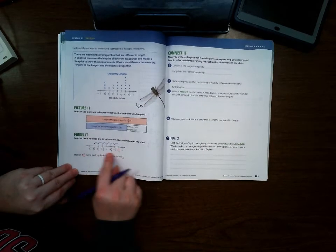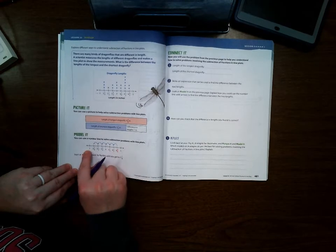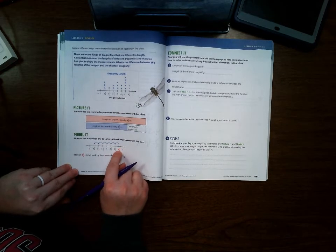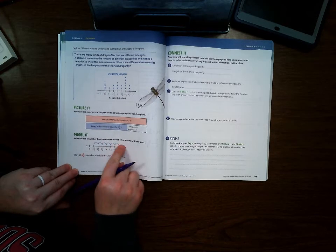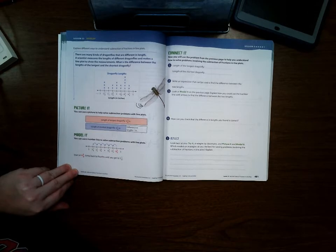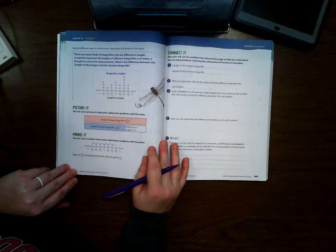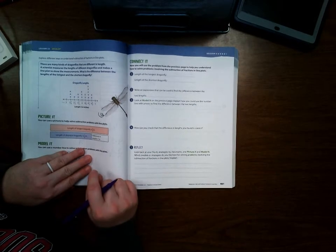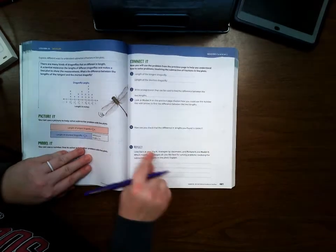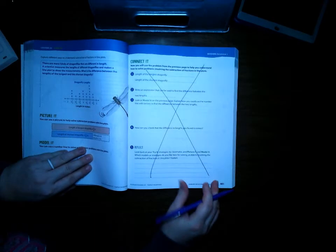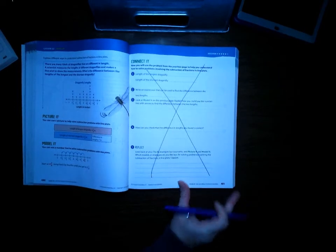You can also do this using a number line. You would draw it from 3 to 5, start at the 4 and 3/4, and then subtract 3 and 1/4, and you would still get the difference. On page 481, this is just going over what we already did, so go ahead and X that out, and then turn to page 482.